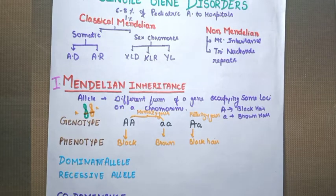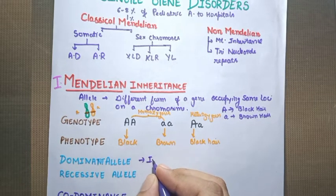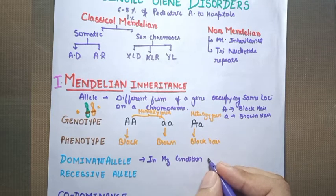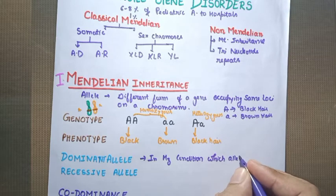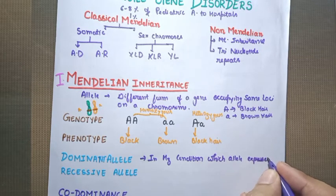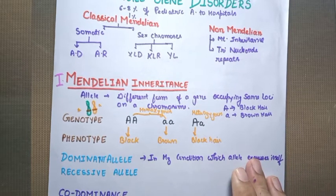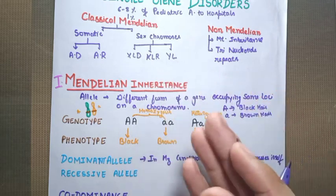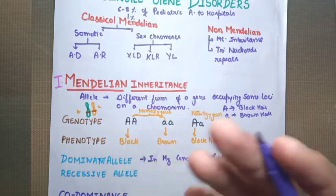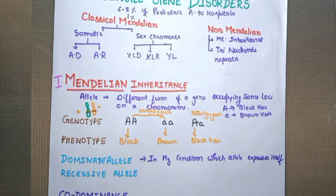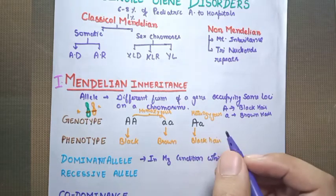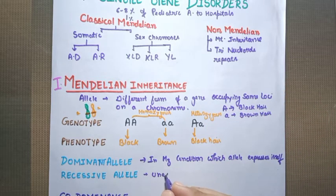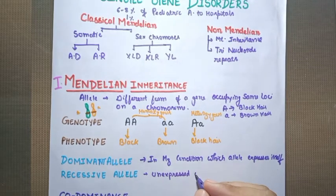A dominant allele is one that expresses itself in heterozygous condition. If the condition is homozygous, it is obvious — capital A codes for black hair and small 'a' codes for brown hair. But if the condition is heterozygous, the allele which expresses itself in the phenotype or physical appearance is called dominant, while the unexpressed allele is called recessive.